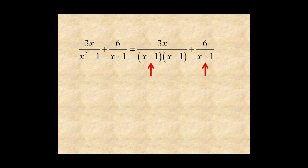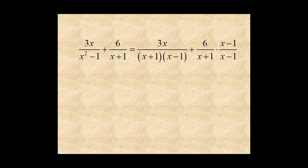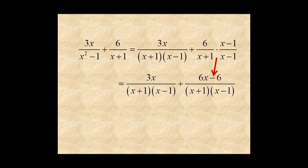To add, the second denominator needs a factor of x minus 1. So multiply the second expression by x minus 1 over x minus 1. This gives 6x minus 6 over x plus 1 times x minus 1.